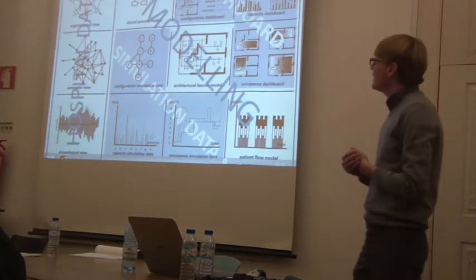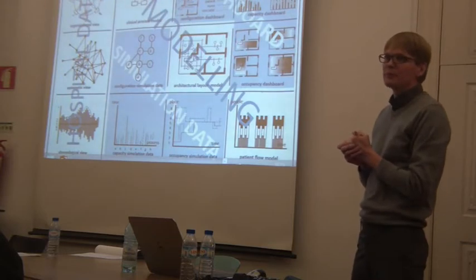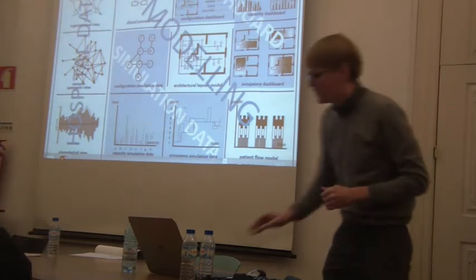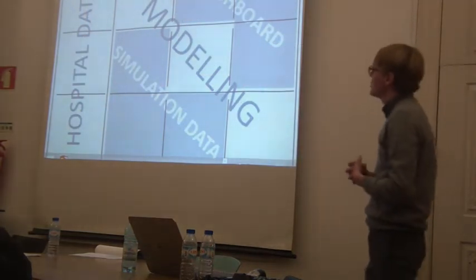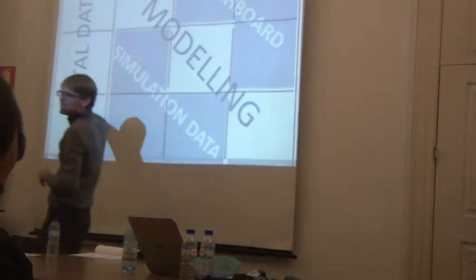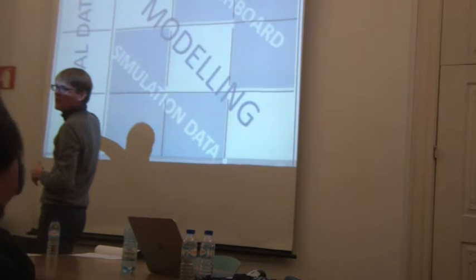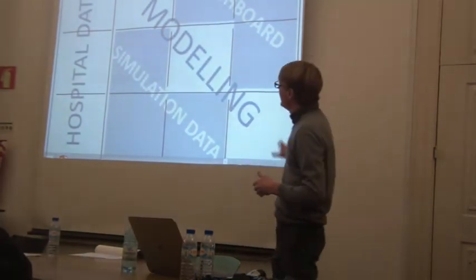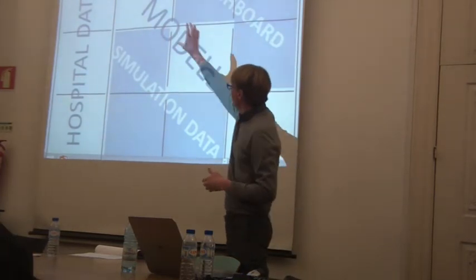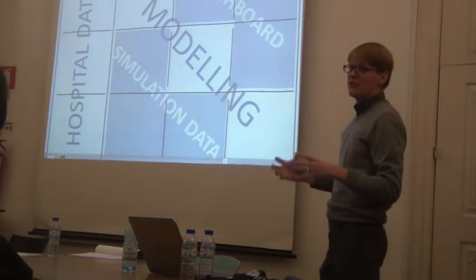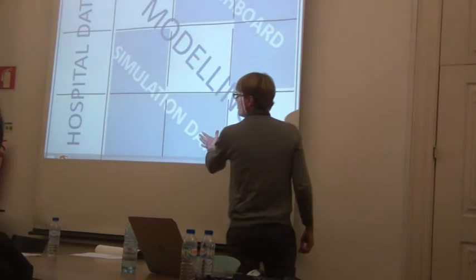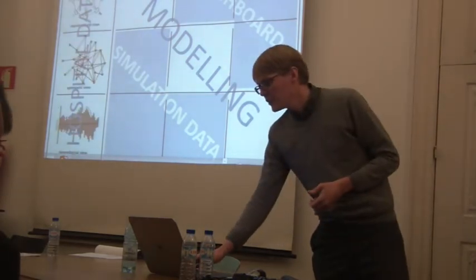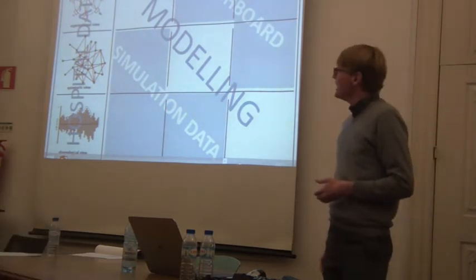To do that, I made a conceptual model of how this can be connected. This model consists of four parts. The first is hospital data — actual data from the hospital administration about patients, blood, movement of equipment, and movement of people. The second is modeling — the possibility to change things as they are. The third is simulation data. The fourth is a dashboard, which makes it possible to see what happens when you are modeling and changing things.